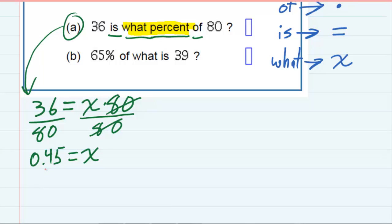And the way that we do that is we take the decimal and we move it twice to the right. That gives me 45. But now I add the percent sign. So for that first question there, A, 36 is 45% of 80.